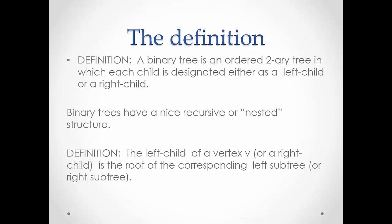In this video, we're going to talk about binary trees. A binary tree is an ordered two-ary tree, which means each vertex has at most two children. The fact that it's ordered means we're going to assign each child a name: the left child and the right child.